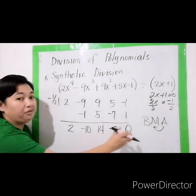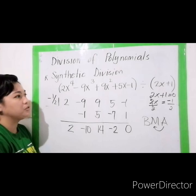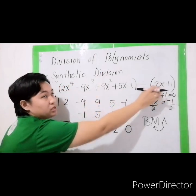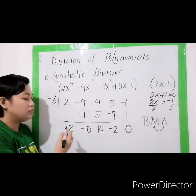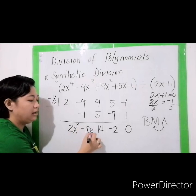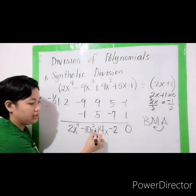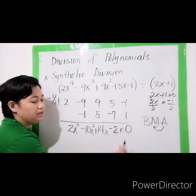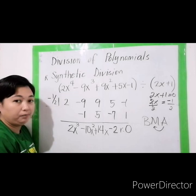We now have all the coefficients. Assign variables: highest exponent in the dividend is 4, in the divisor is 1, so 4 minus 1 is 3. We start at x raised to 3, then x raised to 2, x, and constant. The remainder is 0. If the remainder is 0, you don't need to write it.